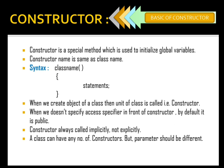When we declare a constructor, we are not writing 'public' and we are not writing any return type, because in syntax we don't require public and we don't require any return type. We just require the class name with function brackets open and close, and inside the curly braces we have the task — that is initialization of global variables, meaning the statements are considered as initialization.